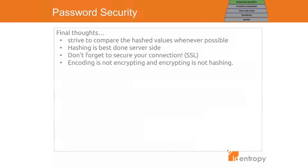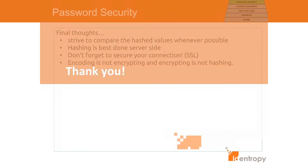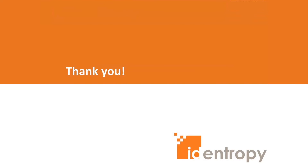In conclusion, a few final thoughts. It's best to strive to compare the hashed values whenever possible and feasible. Hashing is best done on the server side — while it can be done client side there are risks associated with that as well. Don't forget to secure your connection between the client and your authentication system. And finally: encoding is not encrypting, encrypting is not hashing, and hashing is not encoding — these are three different terms which each have different meanings. This was just an overview of a topic that has a lot of depth, and there is of course much more to be said about hashing, authentication, and passwords. I hope this was a helpful introduction that explained the differences of each and recommended ways to handle passwords.